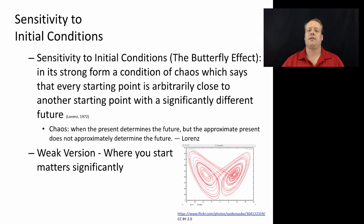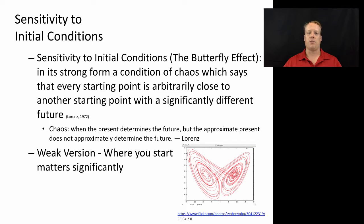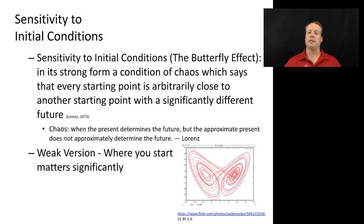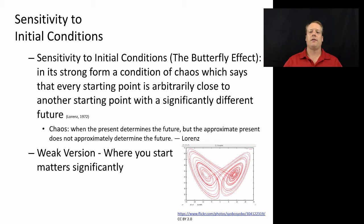Related to path dependence is the notion of sensitivity to initial conditions, which has two ways it's often used — a strong condition and a weak condition. The strong condition comes from chaos theory, which says that every starting point is arbitrarily close to another starting point with a significantly different future. It was Lorenz who really defined that in 1972. What he was saying was that if you choose two points, even if they're arbitrarily close to each other, they may wind up at very different places after the system runs. He generated the famous Lorenz curve, which illustrates that you can choose very close points that wind up very differently.